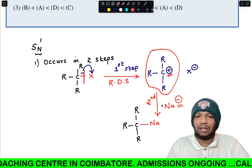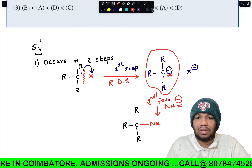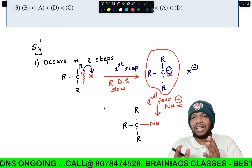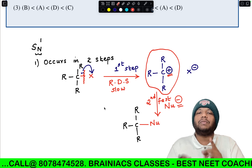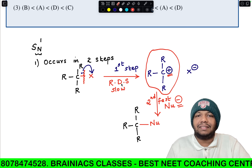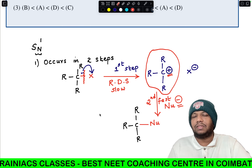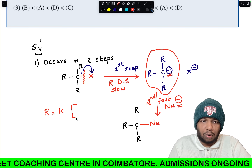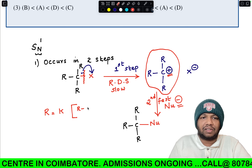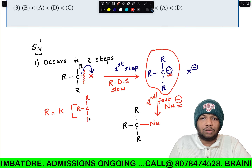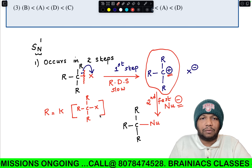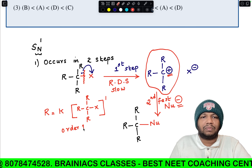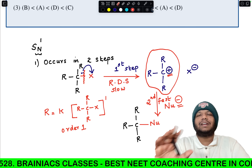The nucleophile has a negative charge and the carbocation has a positive charge, so the second step is essentially ionic and happens very fast. Since the first step is very slow, it is the rate-determining step. The rate equation shows the rate is proportional to the concentration of the alkyl halide only — no nucleophile appears — which is why the order is one.